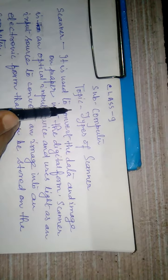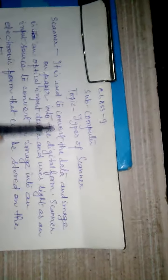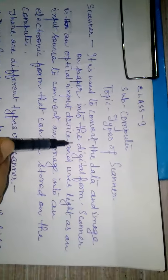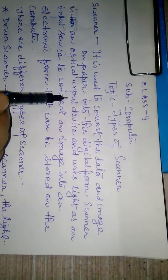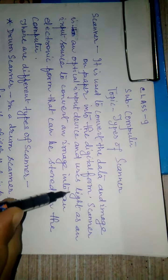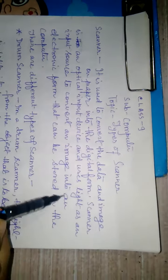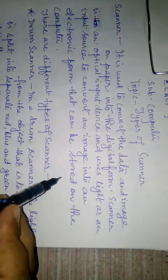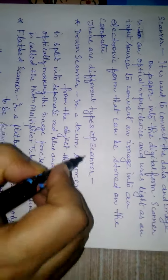Welcome students, today we are going to discuss types of scanner. A scanner is used to convert the data and image on paper into digital form. It is an optical input device that uses light as an input source to convert an image into an electronic form that can be stored on the computer. There are different types of scanner.